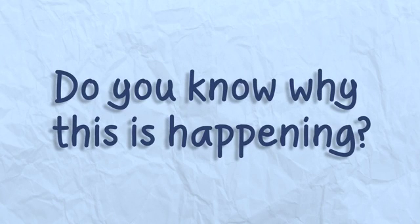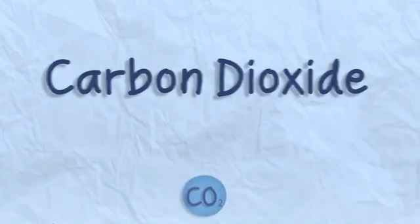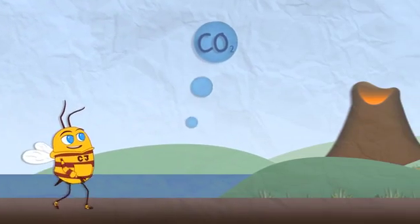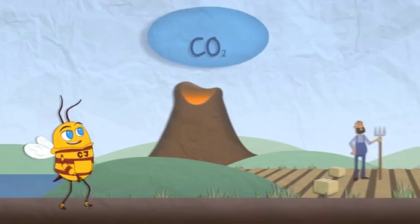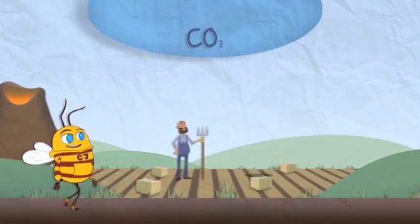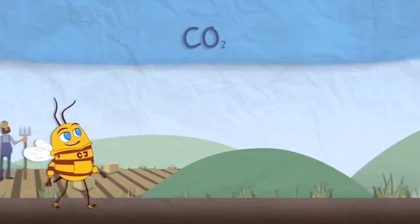Our world's climate is changing. Do you know why this is happening? Carbon dioxide, or CO2, is a gas that comes from the sea, volcanoes, dead plants and animals, even people. It rises up into the sky, into a layer around our planet Earth called the atmosphere.